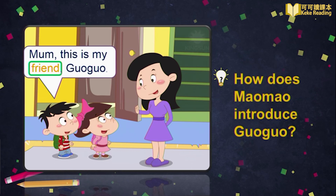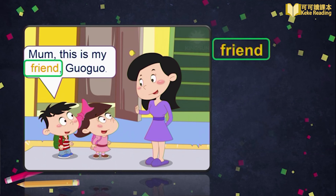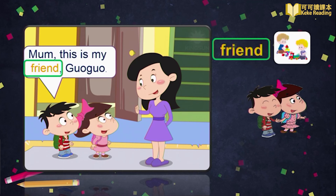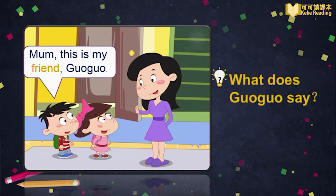Wonderful. Now, look here. Do you know the word 'friend'? It means 朋友 in Chinese. 毛毛 and Guo Guo are friends — they play together. 毛毛和Guo Guo是朋友，他们能在一起玩耍。Do you have friends? You must have a lot.